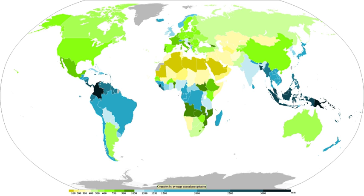The flow of the westerlies into the Rocky Mountains leads to the wettest, and at elevation snowiest, locations within North America. In Asia during the wet season, the flow of moist air into the Himalayas leads to some of the greatest rainfall amounts measured on Earth in northeast India.